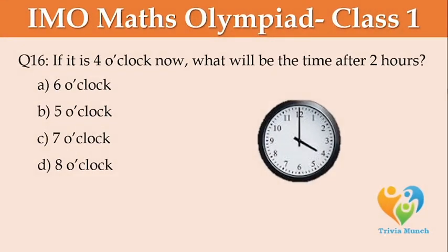If it's 4 o'clock now, what will be the time after two hours? Option A: 6 o'clock, Option B: 5 o'clock, Option C: 7 o'clock, Option D: 8 o'clock.